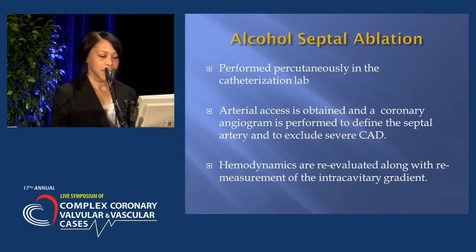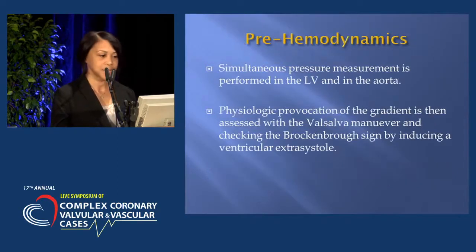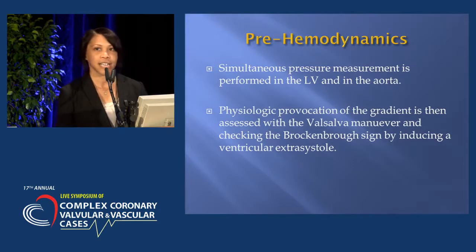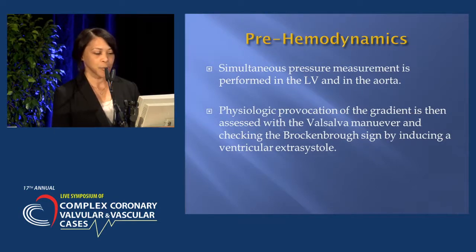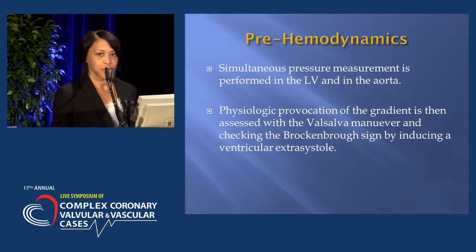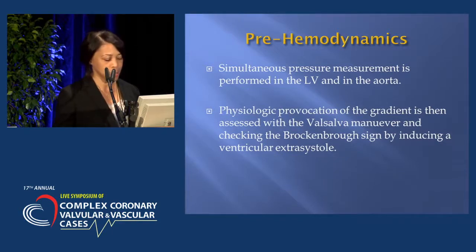Hemodynamics are re-evaluated along with re-measurement of the intracavitary gradient. For pre-hemodynamics, simultaneous pressure measurements are performed in the left ventricle and in the aorta. A physiologic provocation of the gradient is assessed with a Valsalva maneuver — we ask the patient to cough — and we check the Brockenbrough sign by inducing a ventricular extrasystole. The Brockenbrough sign is an absolute decrease in the pulse pressure of the beat immediately following the premature beat.